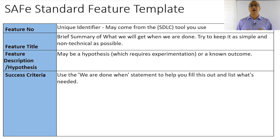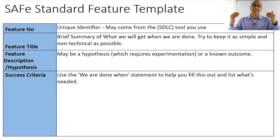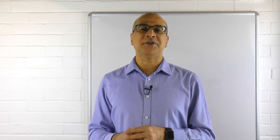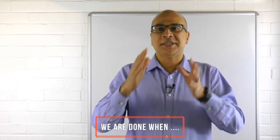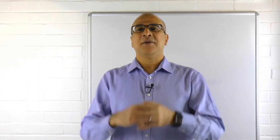After the feature title you have the feature description. This could be the outcome you wish to achieve, or it could be a hypothesis — an experiment, a spike, or an investigation. We may not know the exact outcome for sure, but we may be testing a hypothesis. The third element of the standard feature template is the success criteria: how do we know when we are successful? A quick trick — use the statement 'we are done when we have one, two, three, four things in place' and then we are successful.